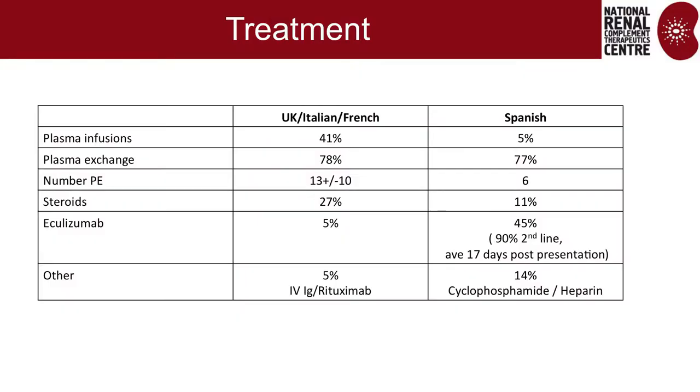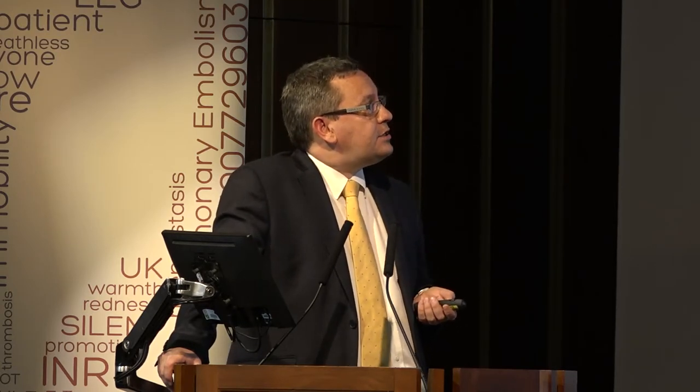In terms of treatment, most patients in the UK, Italian, and French groups had plasma exchange — this was the era when eculizumab was just coming out. The Spanish group had far more patients on eculizumab, but all had it as second line. Only 5% in the Italian, French, and UK group received eculizumab. The vast majority of people in this time frame were having plasma exchange.